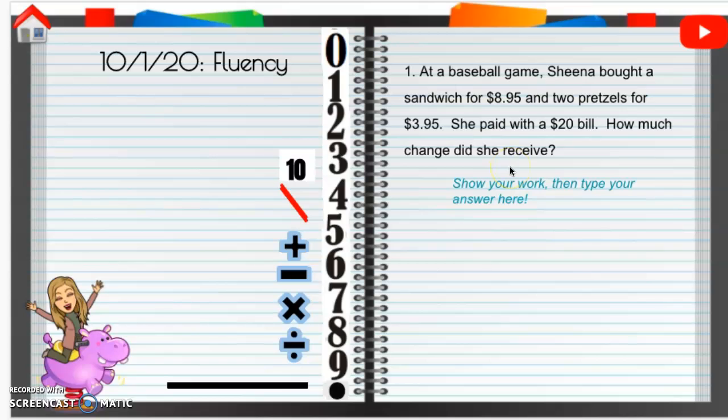So first, what do you think we're going to do here? So if you go to a baseball game, so we went with Sheena, and Sheena bought a sandwich that was $8.95. Then she bought two pretzels and both of them together because it doesn't say $3.95 each. But she bought two pretzels and they cost $3.95.